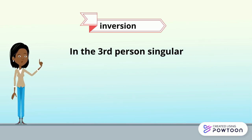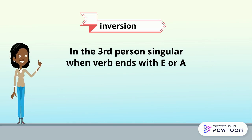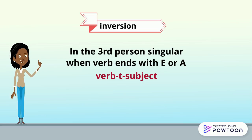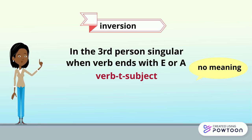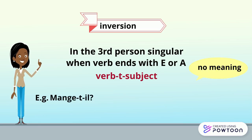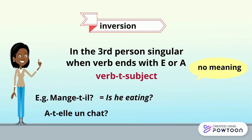In the third person singular, when the verb ends with an e or an a, add T between hyphens between the verb and the subject. The T has no meaning; it is only used to make the pronunciation easier. For example: "Mange-t-il?" — is he eating? "A-t-elle un chat?" — does she have a cat?